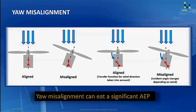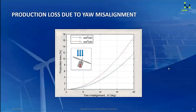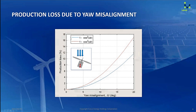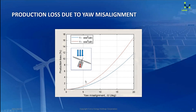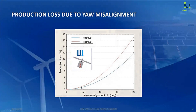This misalignment can eat a significant amount of AEP — it can be a few percent. This is a quick calculation of how much loss to be expected due to yaw misalignment. The vertical axis is the production loss and the horizontal axis is the misalignment angle. It's said that this production loss follows cosine squared or cosine cubed. Many turbines have a four-degree misalignment, in which case we may be losing around one percent of production.